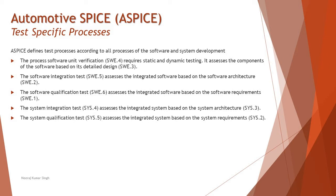In the previous tutorial we discussed the different capability models and indicators which can be used to assess the progress of a particular methodology within an automotive industry. Here we will be understanding more about what kind of specific processes can be applied from different parameters and indicators of the test process. ASPICE defines test processes according to all processes of software and system development, which is the same standard from the previous tutorial that helped us understand what generic parameters are available to assess the maturity of an organization.